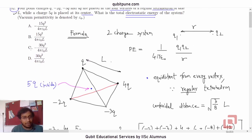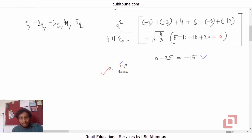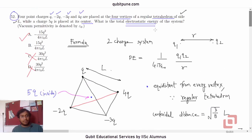So that is negative 15 Q squared upon four pi epsilon naught L. That is going to be our answer. Let us check it once. Negative 15. That is right. And Q squared four pi epsilon naught L. So, correct option is A.